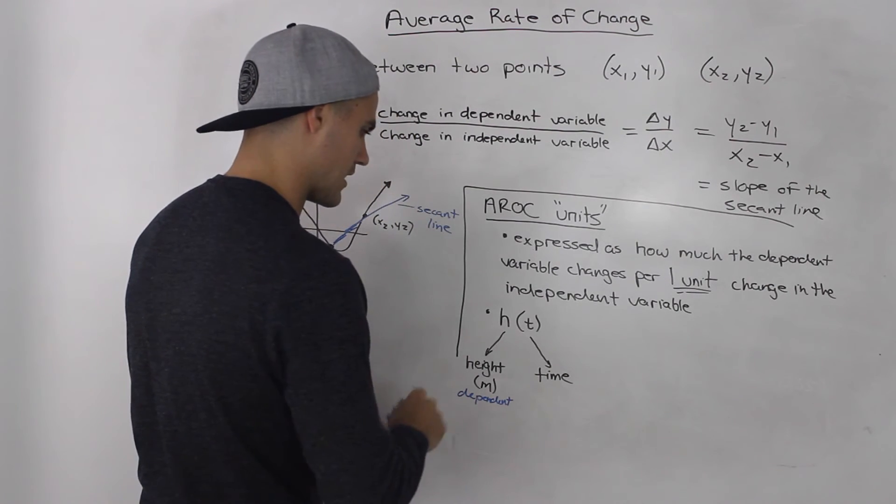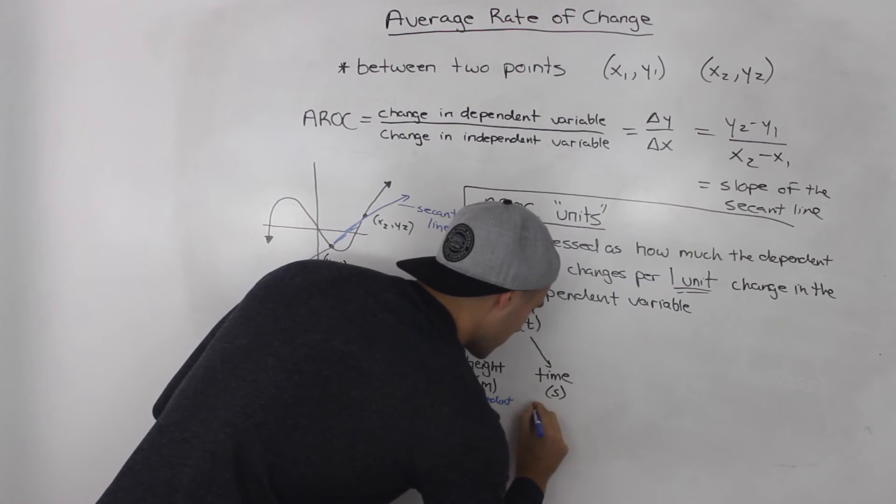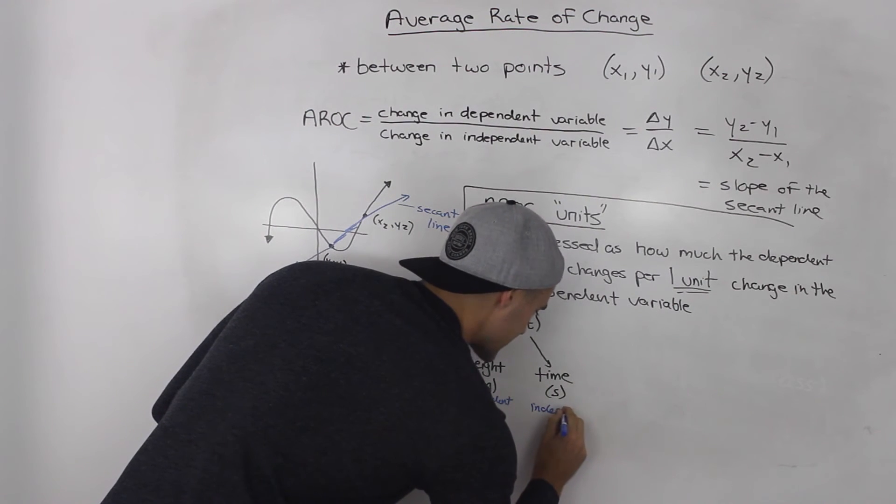And the time, measured in seconds, is the independent variable. This is what would be on the x-axis.